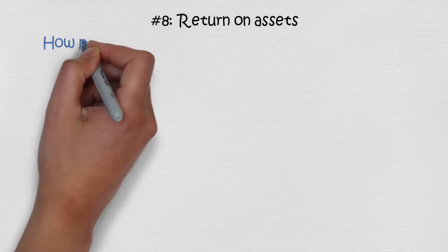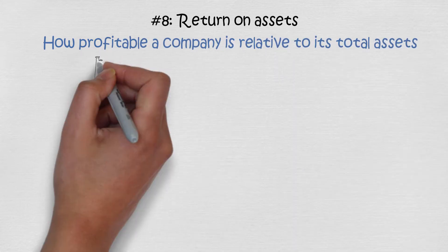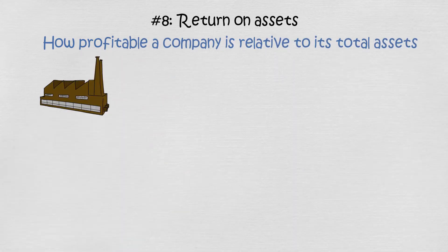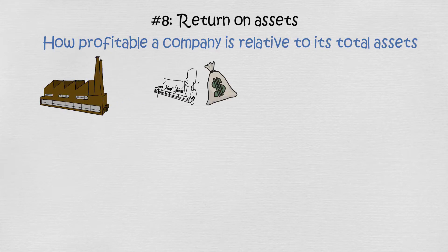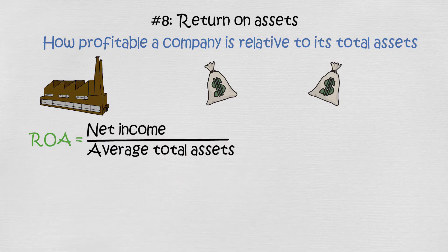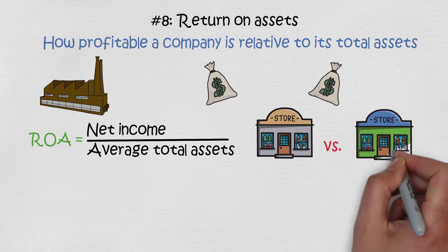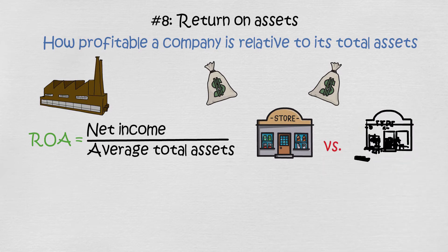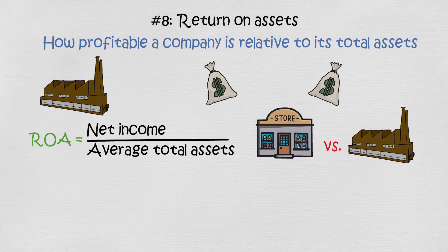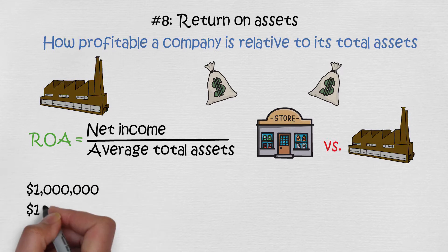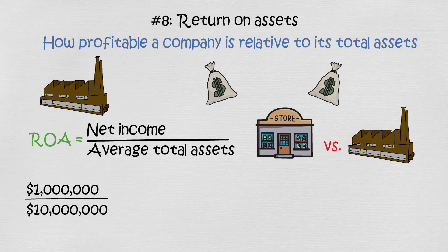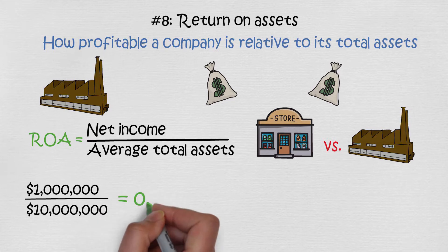Financial ratio number 8: return on assets. This ratio shows how profitable a company is relative to its total assets — how efficiently the company's assets are generating earnings. The formula is net income divided by average total assets. It's useful for comparing companies in the same industry and varies across industries. Our company Orange has a net income of $1 million and average total assets of $10 million, giving a return on assets of 0.1, or 10%.